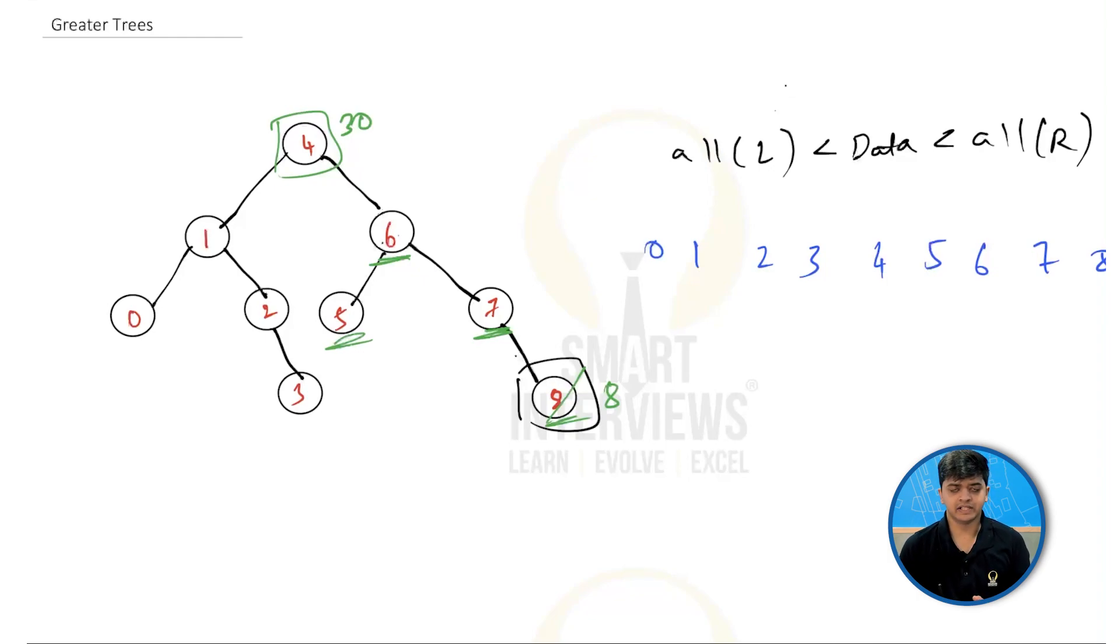Now, since I want the greater elements, what I'm going to do is I'm going to sort the in-order in reverse, or get the reverse in-order. So reverse in-order will be nothing but 8, 7, 6, 5, 4, 3, 2, 1 and 0. Now, how do I get the reverse in-order for this?